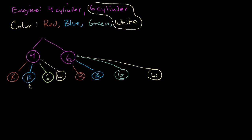This outcome right here is a four-cylinder blue car, and this outcome over here is a six-cylinder green car. So there are eight equally possible outcomes. Which outcome matches the white six-cylinder car? That's this one right over here — it's one of eight equally likely events, so we have a one-eighth probability.